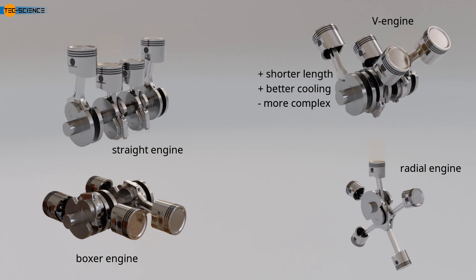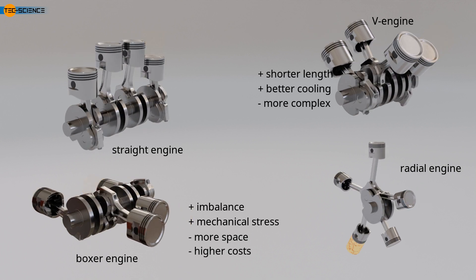Compared to inline or V-engines, boxer engines have the advantage that the reciprocating masses and thus the imbalance of rotation cancel each other out. As a result, the engine operates more smoothly with lower noise levels and reduced mechanical stress. However, boxer engines have the disadvantage of requiring more space for installation and higher manufacturing costs.